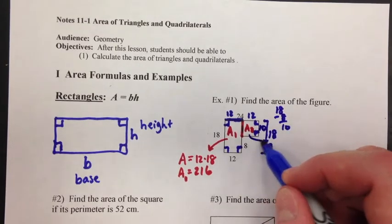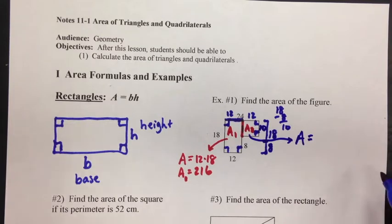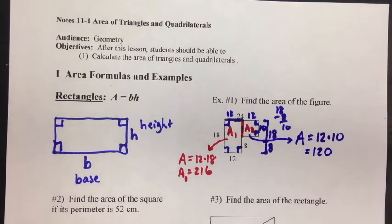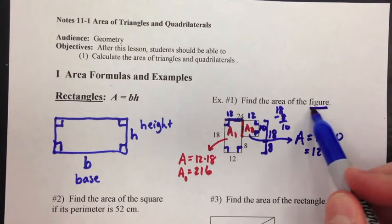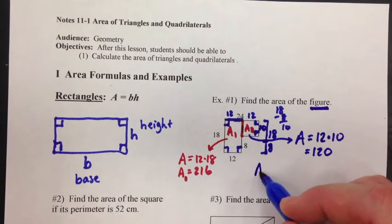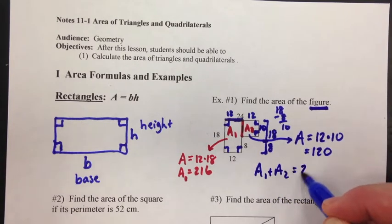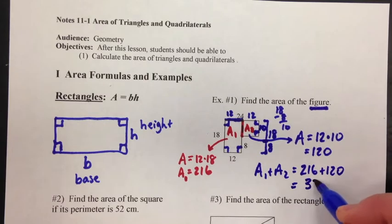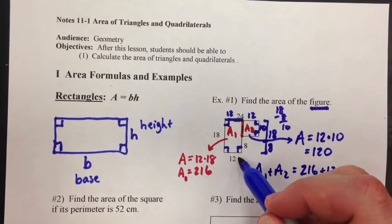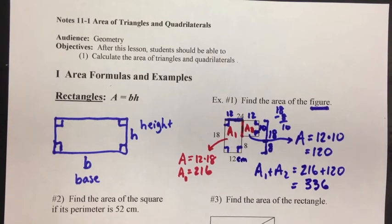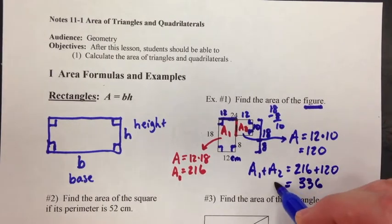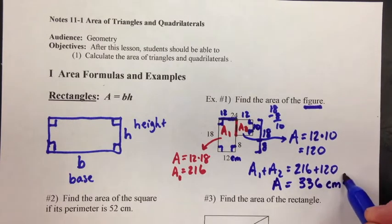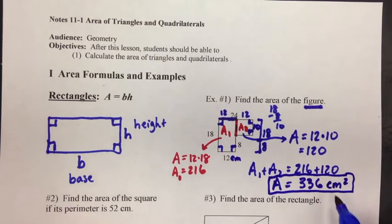So the area here, area is base times height. The base is 12, the height is 10, and the area is 120. Now, we want the area of the figure, the whole thing. So we'll take area 1 plus area 2. That's 216 plus 120. So the area of the figure is 336. Let's say that this was centimeters. Our answer, when you find area, area is two-dimensional. It's 336 centimeters squared.